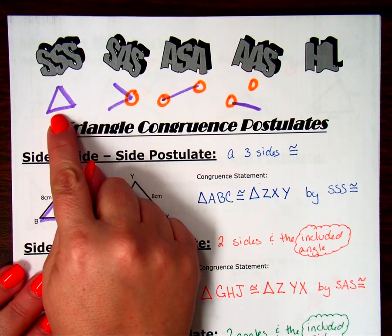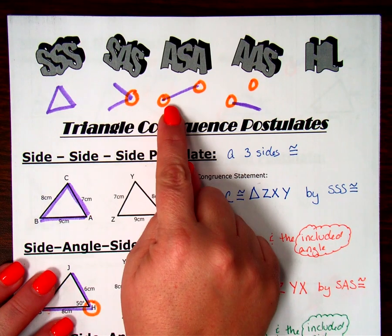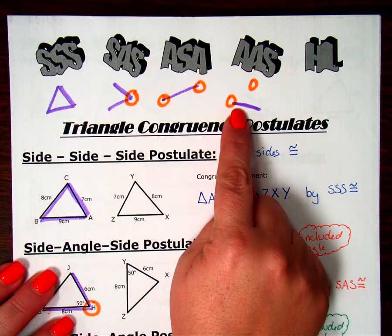let's review our postulates. We have side-side-side, side-angle-side, angle-side-angle, and angle-angle-side.